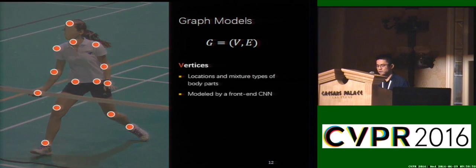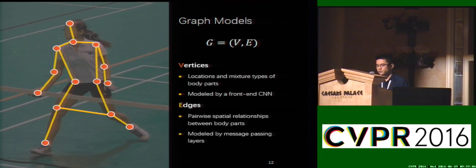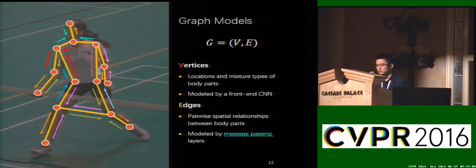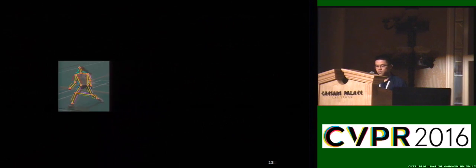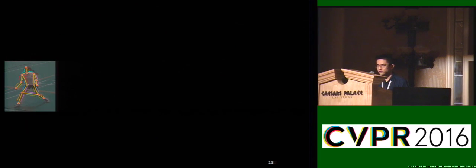The vertices are modeled by a front-end CNN. The edges model the pairwise spatial relationships between body parts. A node sends a message to each of its neighbors and receives messages from each neighbor, as indicated by the arrows. The proposed framework can be viewed as two components.